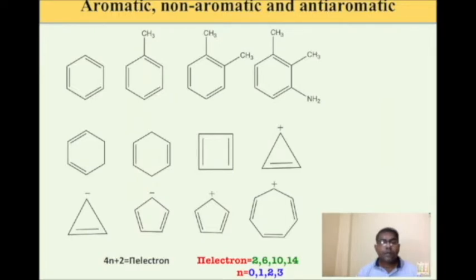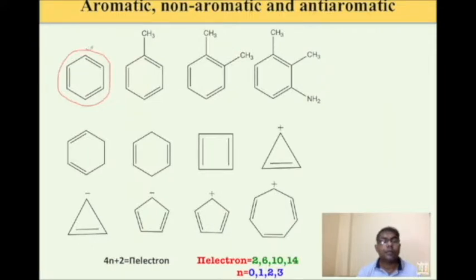Let us take some examples of aromatic, non-aromatic and anti-aromatic compounds. I have taken 12 molecules. The first one is benzene and it is aromatic. Why is it aromatic? Because it follows all the rules laid down for a compound to be aromatic. It has sp2 hybridized carbon atoms — all six carbon atoms are sp2 hybridized. It has conjugated double bonds and it is cyclic. It is a planar molecule. This is a derivative of benzene and it follows Hückel's rule.